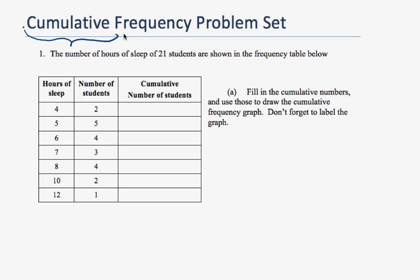And so that implies to me adding things together up. Okay, so we have number of sleep hours of 21 students in this table here. This table says two students slept four hours and five students slept five hours and so on.